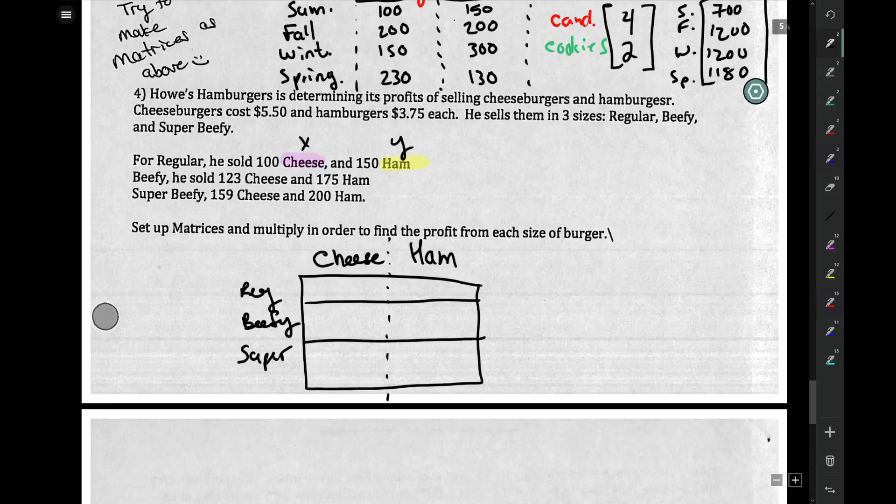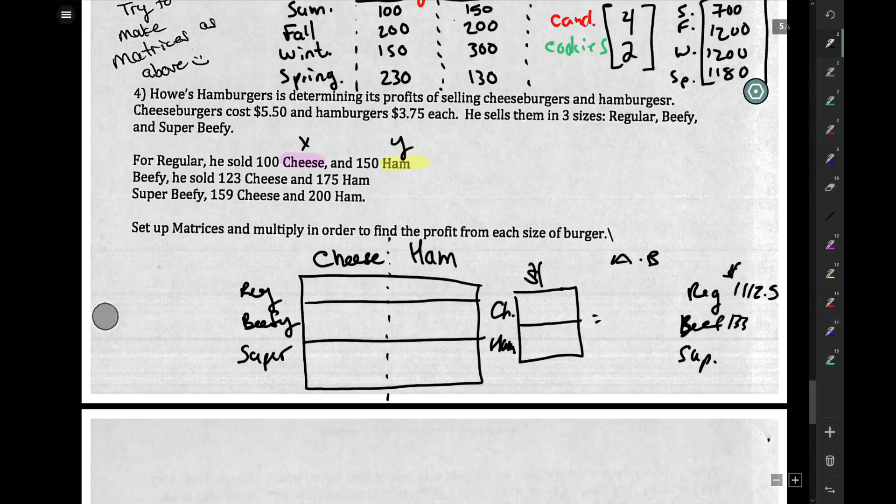And then, of course, you also need your price, which needs to be two rows. And that's for your cheese and that's for your ham. And all said and done, A times B, you should have for regular $11.25, for deluxe $13.75, and for super deluxe $16.50.